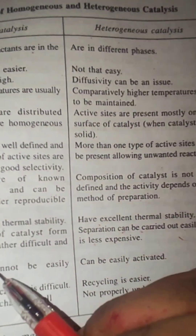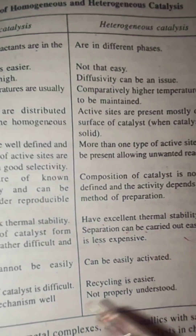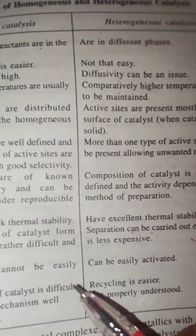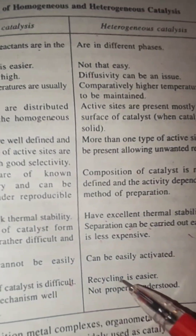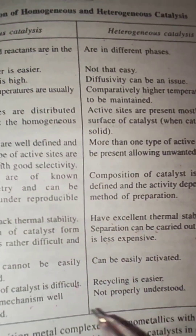Separation of the catalyst from products is rather difficult and expensive in homogeneous catalysis, whereas separation can be carried out easily and is less expensive in heterogeneous catalysis. Homogeneous catalysts cannot be easily reactivated, while heterogeneous catalysts can be easily reactivated. Recycling of homogeneous catalysts is difficult, whereas recycling is easier for heterogeneous catalysts. The reaction mechanism is well understood in homogeneous catalysis, but not in heterogeneous.